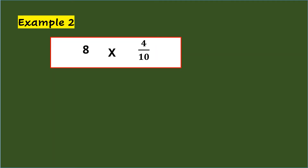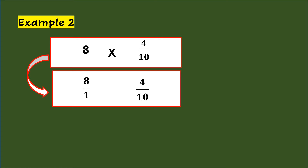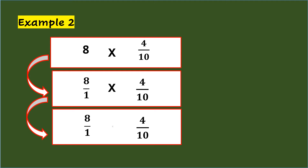Example 2 is another way of multiplying a whole number by a fraction. The first thing to do is to change the whole number to a fraction using the denominator of 1. So, 8 will become 8 over 1 times 4 tenths. From here, you will cancel the numerator 8 of 8 over 1 and also the denominator 10 of 4 tenths with their GCF, which is 2.